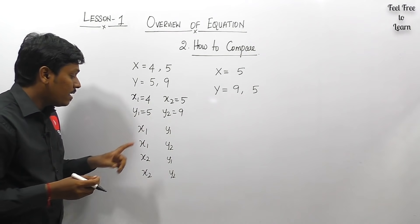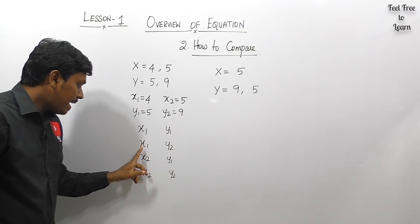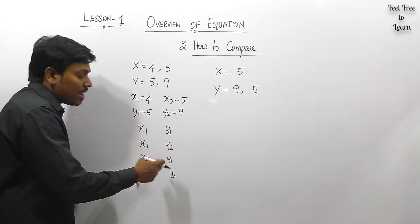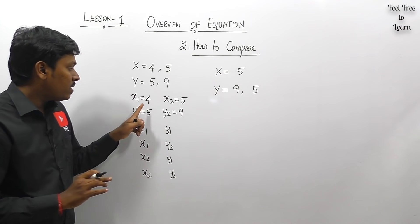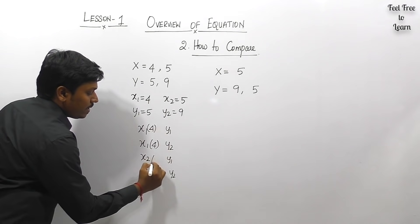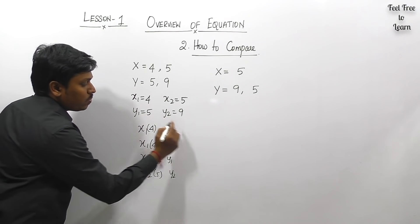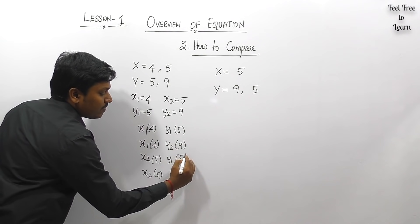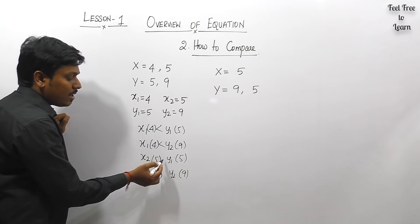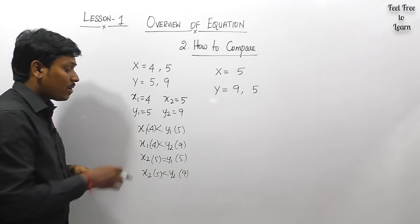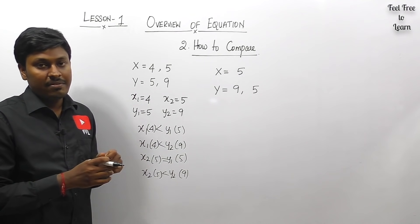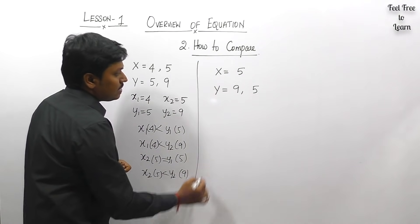We compare x1 with y1, x1 with y2, x2 with y1, and x2 with y2 — that is the logic behind comparing. So: x1 = 4 vs y1 = 5: 5 > 4; x1 = 4 vs y2 = 9: 9 > 4; x2 = 5 vs y1 = 5: equal; x2 = 5 vs y2 = 9: 9 > 5. The concept is that every x value must be compared with every y value.